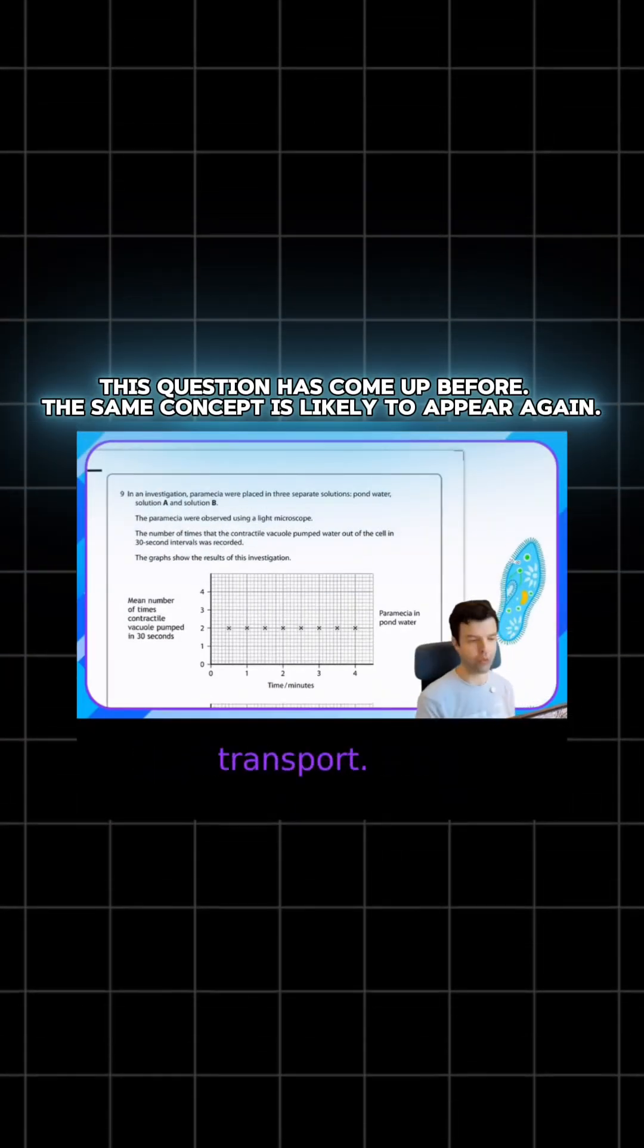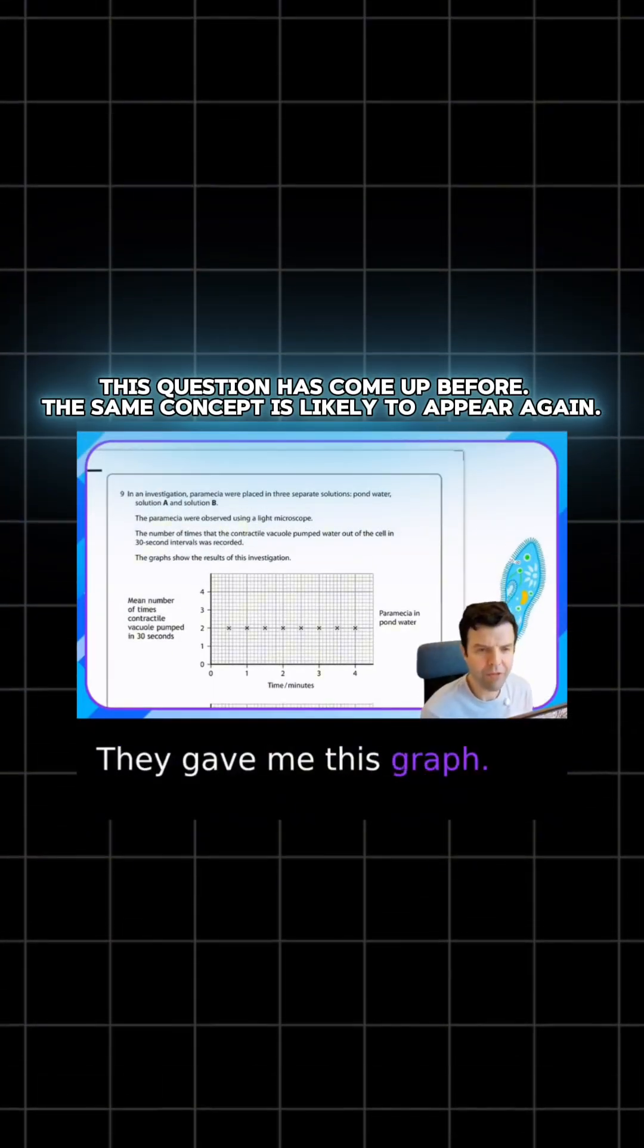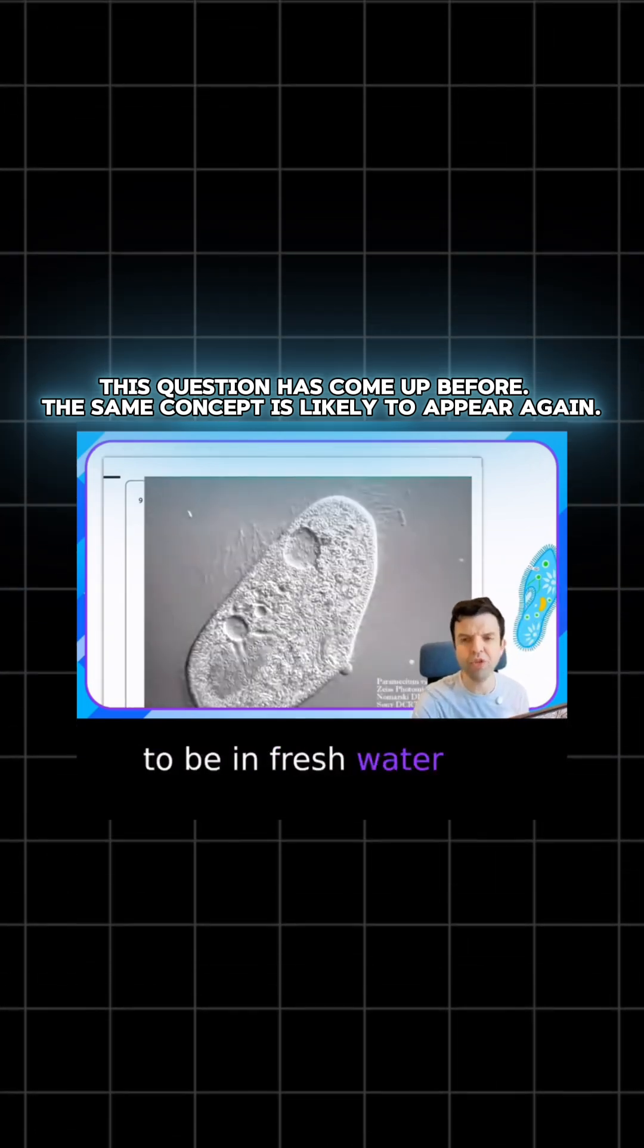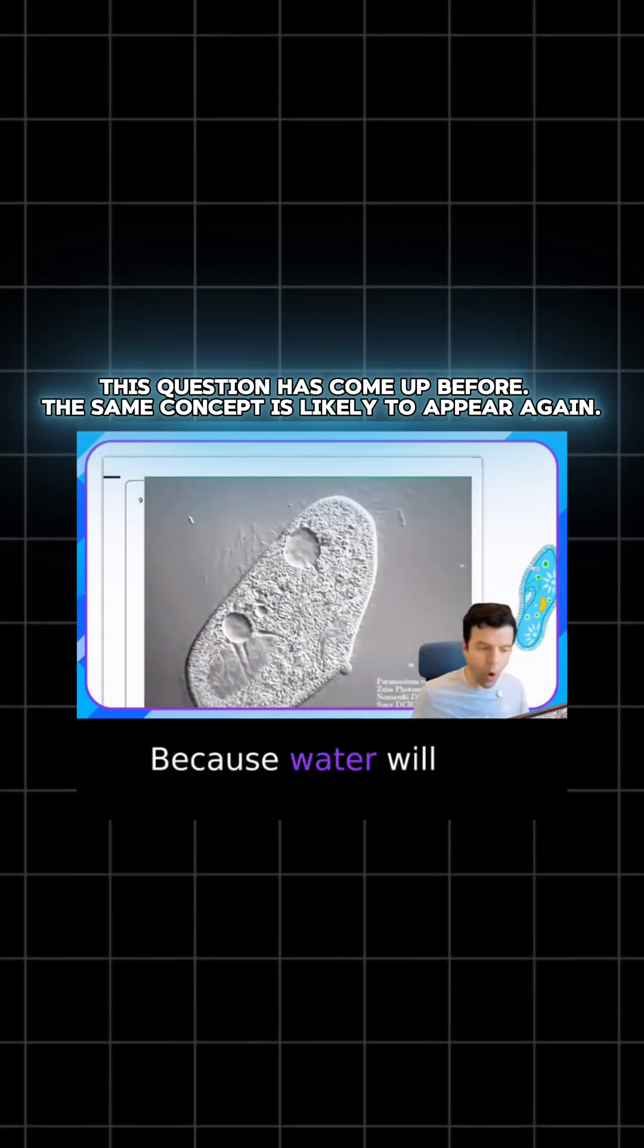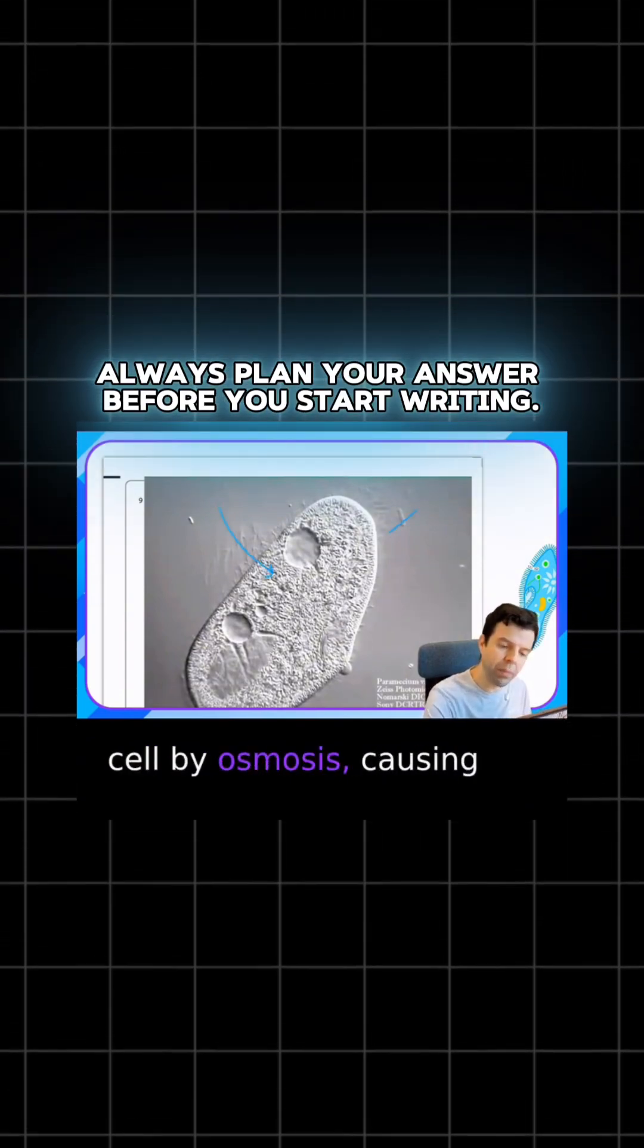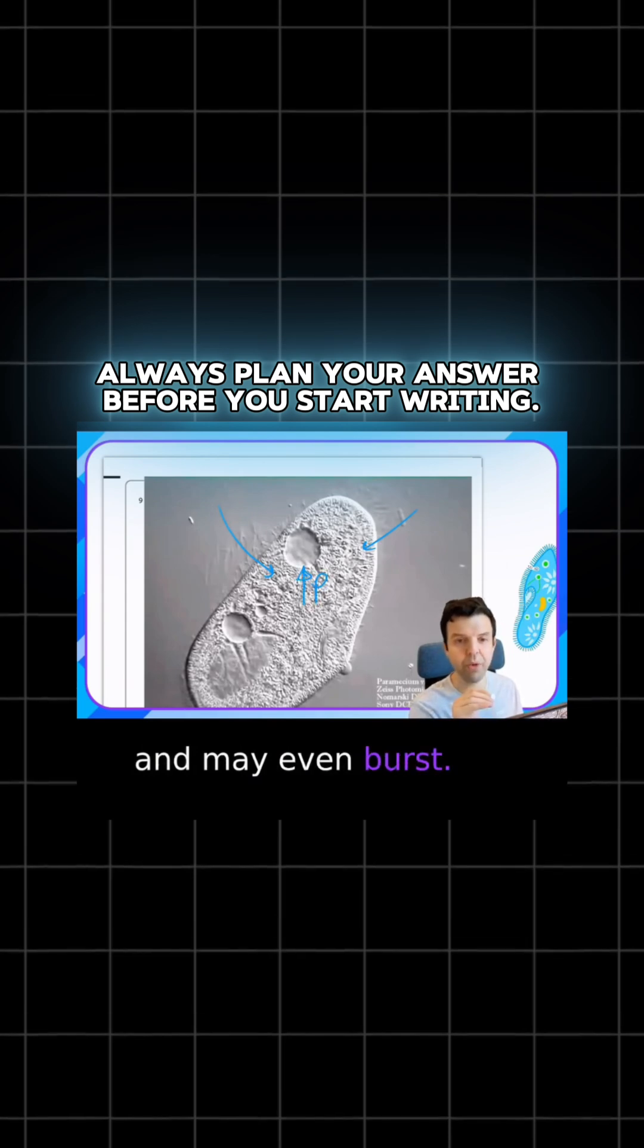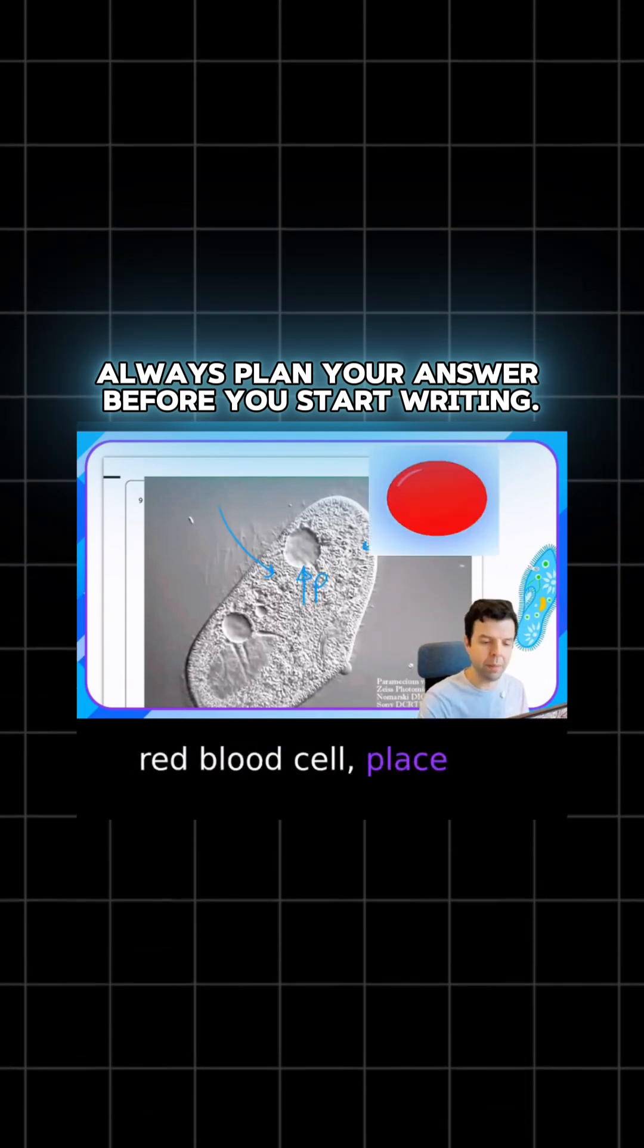It's about membrane transport. They gave me this graph about unicellular organisms. For an animal cell to be in freshwater is a big problem because water will always diffuse into the cell by osmosis, causing the pressure to rise and may even burst. If you take a red blood cell and place it in water, it would burst.